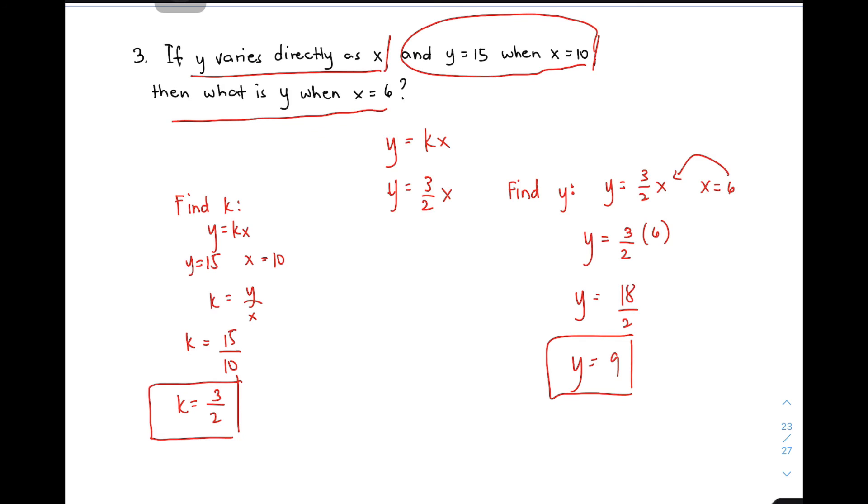Check if this is direct variation. Your X is 10, Y is 15. For the main problem, X equals 6. The value dropped from 10 to 6, it decreases. So we expect that if the X variable decreases, Y should also decrease. It became Y equals 9. From 15, it became 9. That's all.